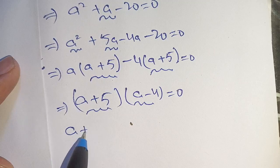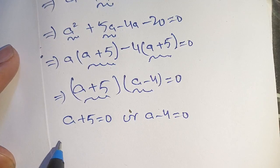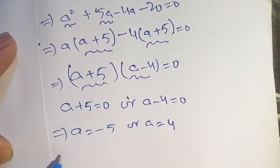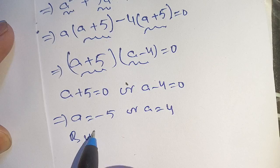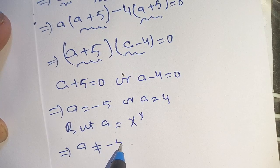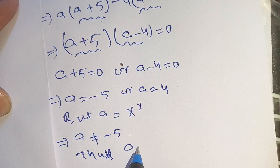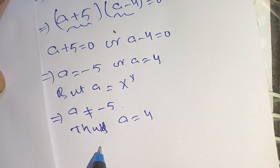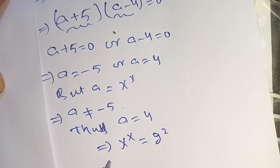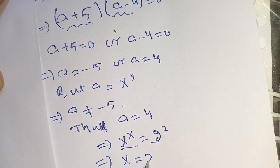Comparing each factor to 0, we get a plus 5 is equal to 0 or a minus 4 is equal to 0, which implies a is equal to minus 5 or a is equal to 4. But a is equal to x power x, which cannot equal minus 5, thus a is equal to x power x is equal to 4, which can be written as 2 power 2. Comparing base to base, this implies x is equal to 2.